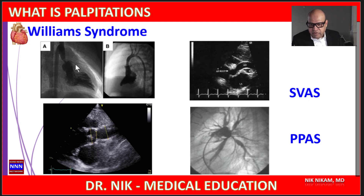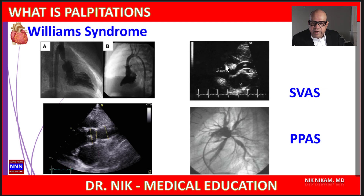Here is the location of the aortic leaflets, and there is a constriction of the aorta in the supravalvular region. Similarly, on an echocardiogram you can see narrowing of the aorta beyond the aortic leaflets. The second characteristic feature in Williams syndrome is peripheral pulmonary artery stenosis — as seen in this angiogram, there are multiple pulmonary branches which show stenosis.